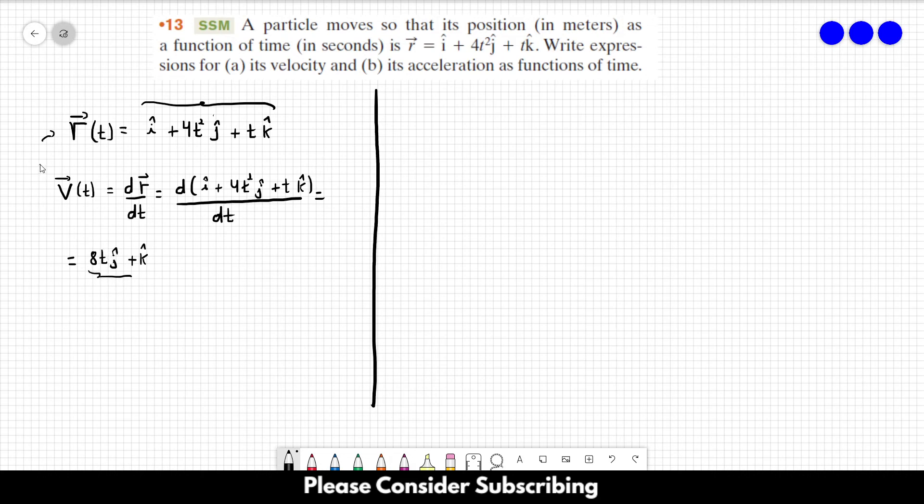So this is letter A. Letter B, the acceleration. So in order to find the acceleration, we have to derive the position two times. We already did one time, and then we got the velocity over here.